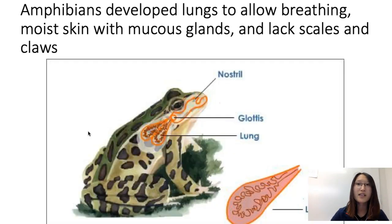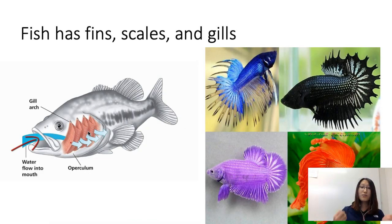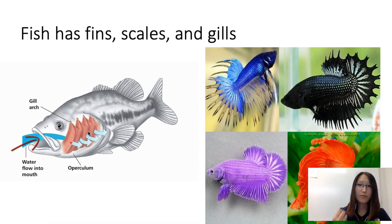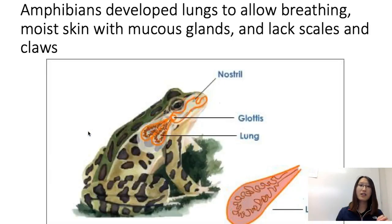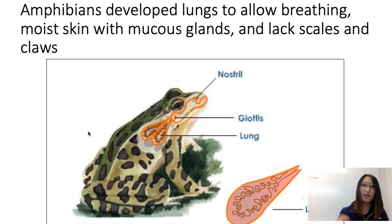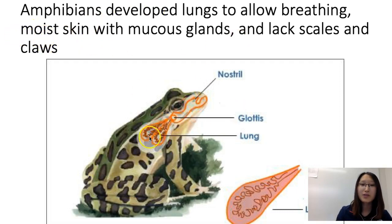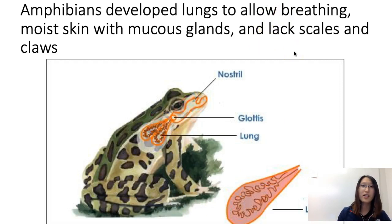The next group is amphibians. Amphibians develop lungs to allow breathing on land. Fish use gills, which work by opening and closing the operculum to pick up dissolved oxygen in water. However, when an animal comes on land, gills no longer work and there is no dissolved oxygen in the air. Amphibians develop lungs as the first step from water to land, but they also have very moist skin with mucous glands to keep the body wet, allowing oxygen to dissolve into the skin. So amphibians breathe using both lungs and skin. They do not have scales — scales would prevent breathing through the skin — but they do have claws.